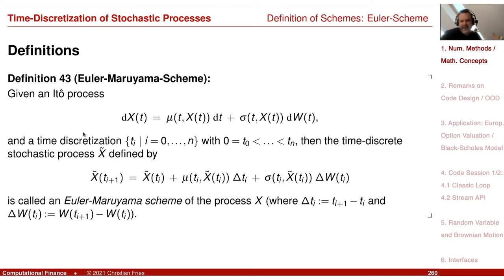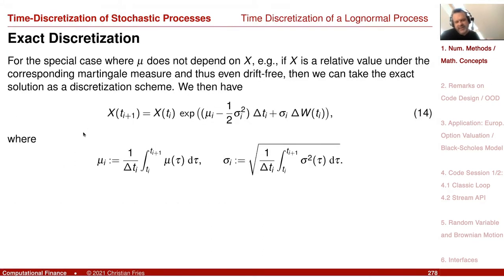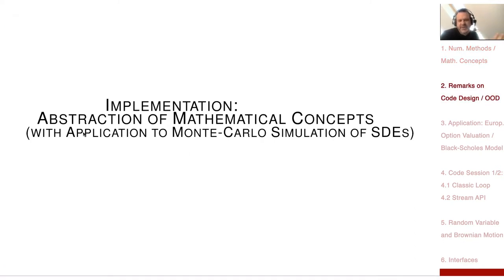There was also a special case: the log-normal process, which has a special coefficient in front of the diffusion part. Moving to the log coordinate gives different discretization options, and discretizing the log of the process had a much smaller discretization error. We could also say there is an exact discretization if the coefficients are piecewise constant. Now I'd like to plug everything together and talk about how to implement these numerical methods for reuse in many different applications.